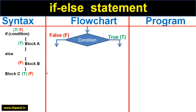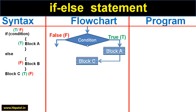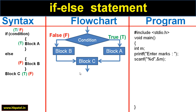Now let us see a flowchart. First we specify the condition from the if statement. There are two options — it results in either true or false. If the condition is true, then block A and then block C. If the condition is false, then block B and then block C.